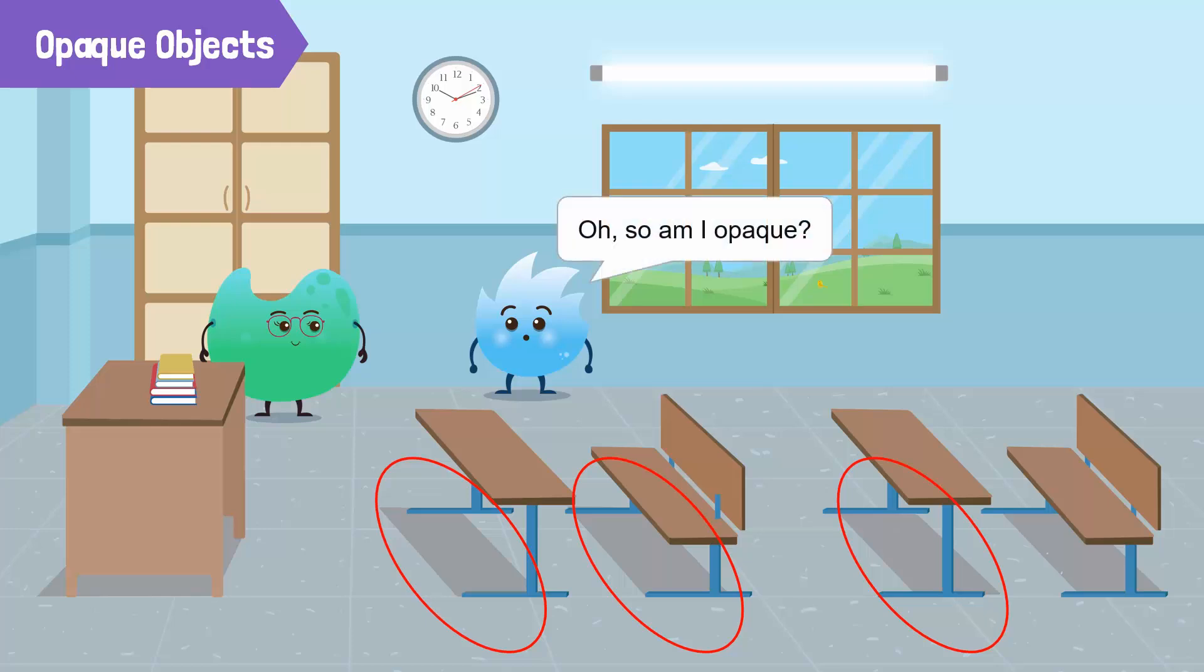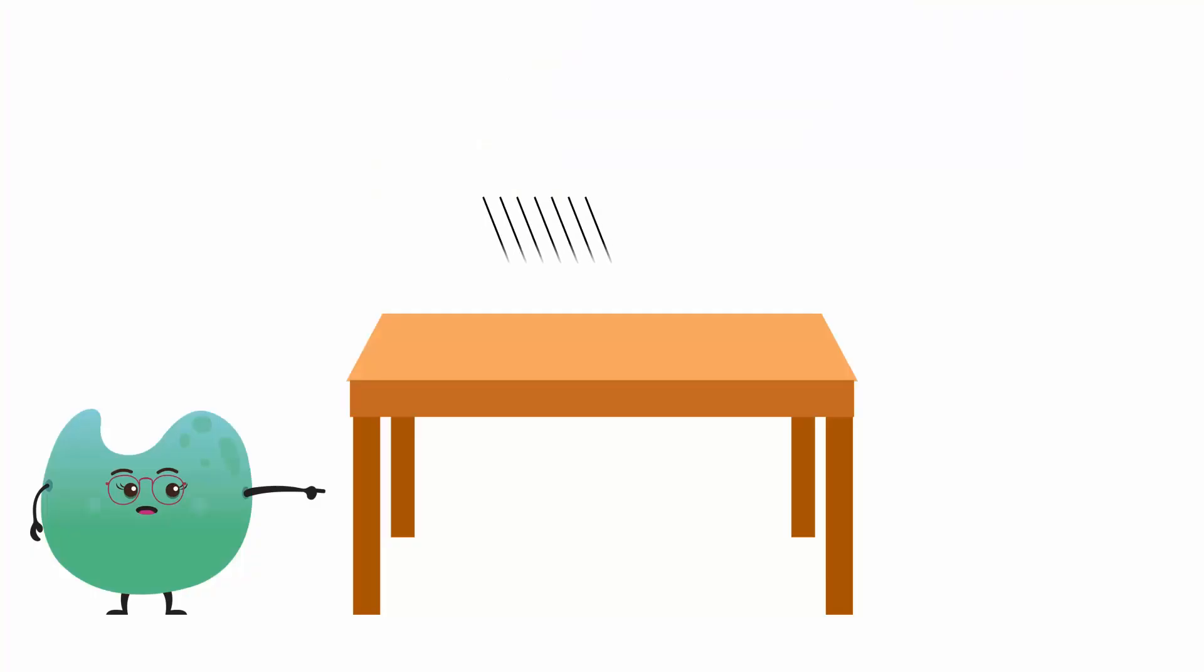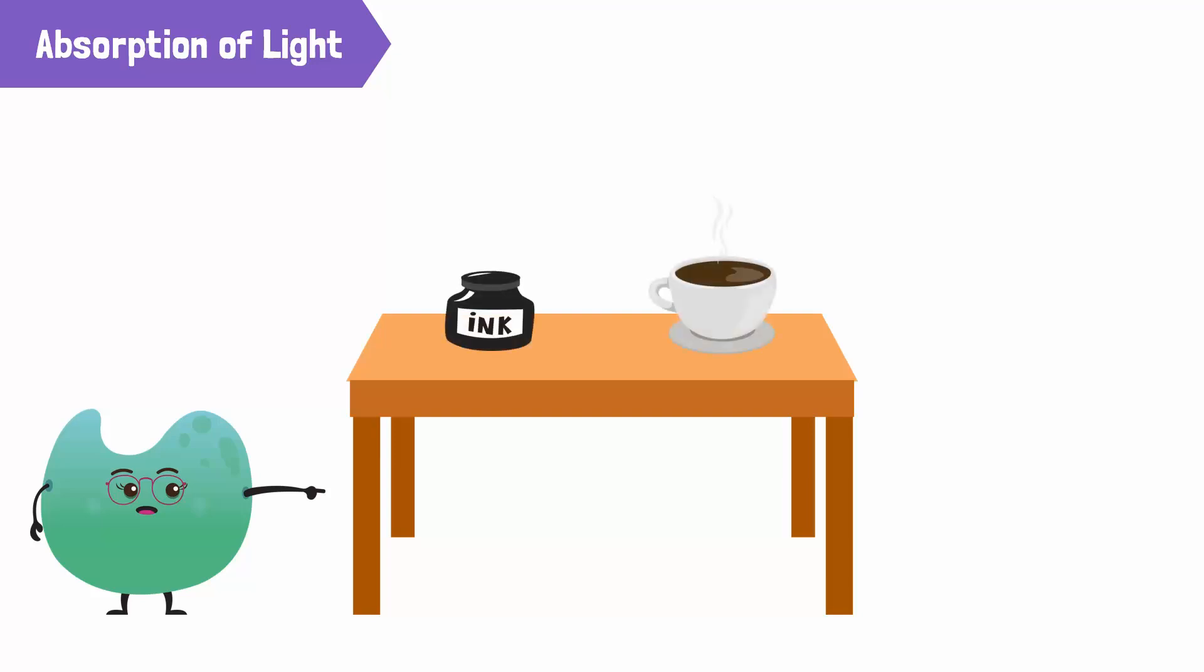Oh, so am I opaque? Yes. When light falls onto opaque objects, some of the light is reflected while the rest is absorbed. The amount of light absorbed by an object depends on its color. Dark colors, like black or dark brown, absorb more light. While light colors, like white or light gray, absorb less light.